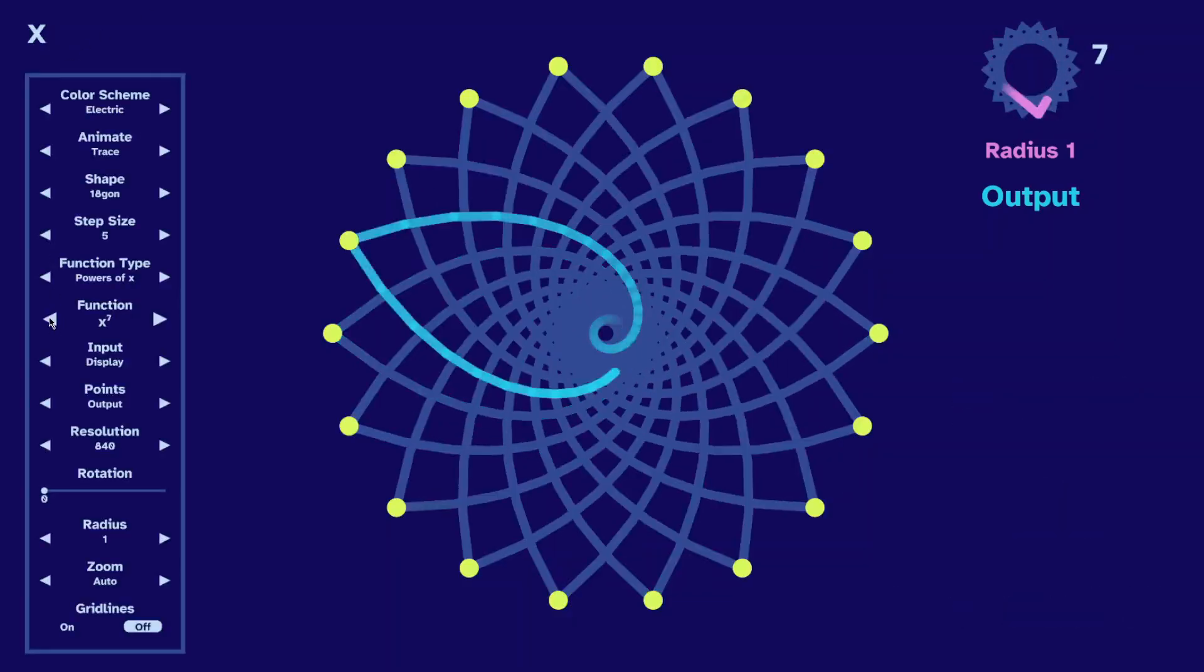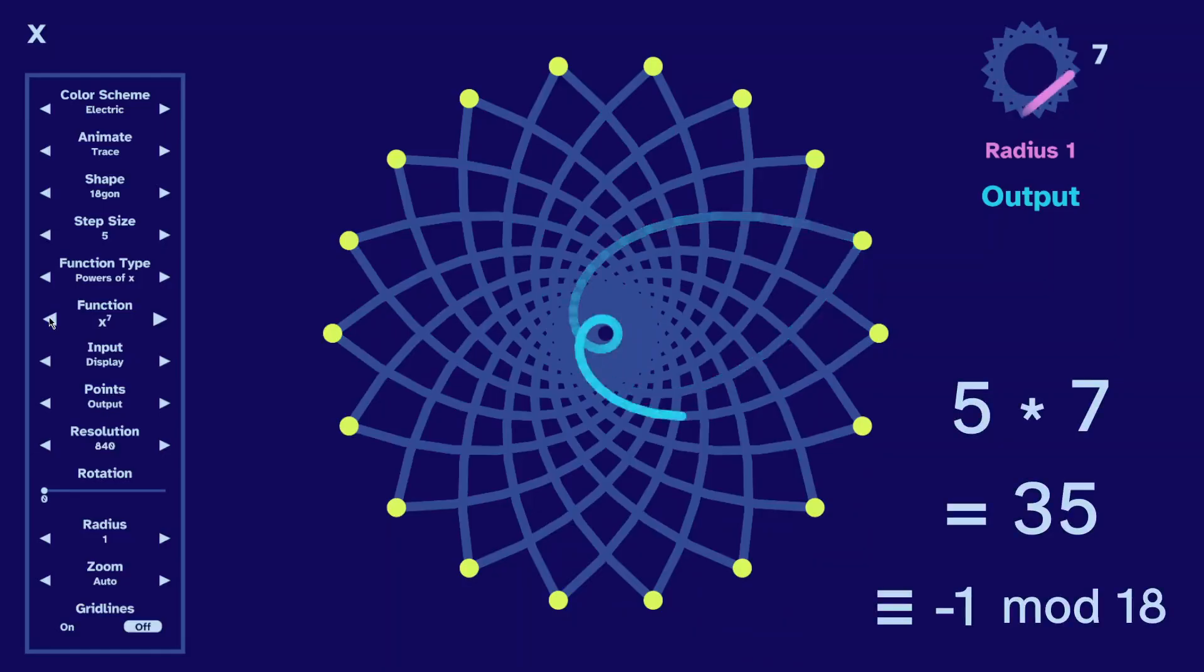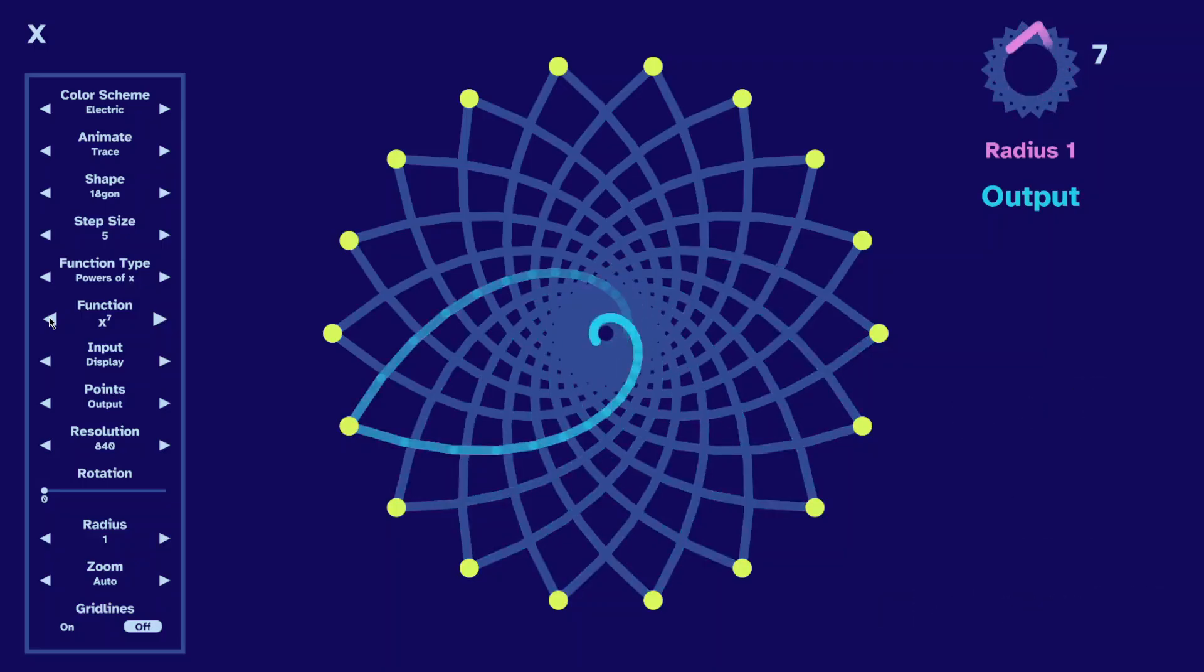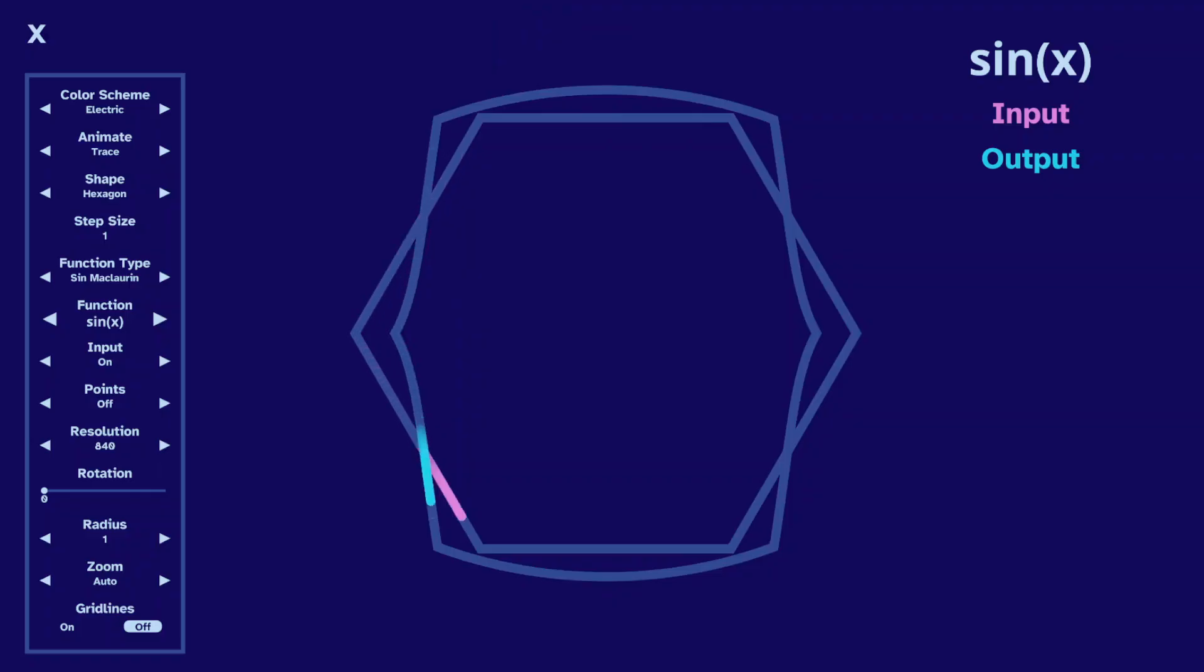If we take this shape to the seventh power, we get the opposite effect, since 35 is negative 1 mod 18. And we can use this tracing animation for other functions, like with the sine of a hexagon.